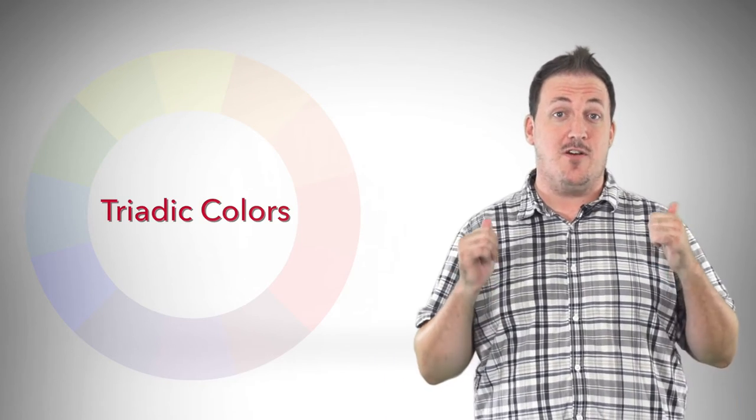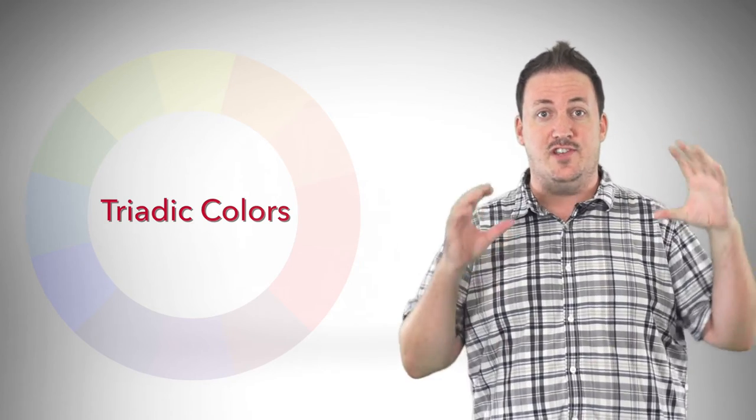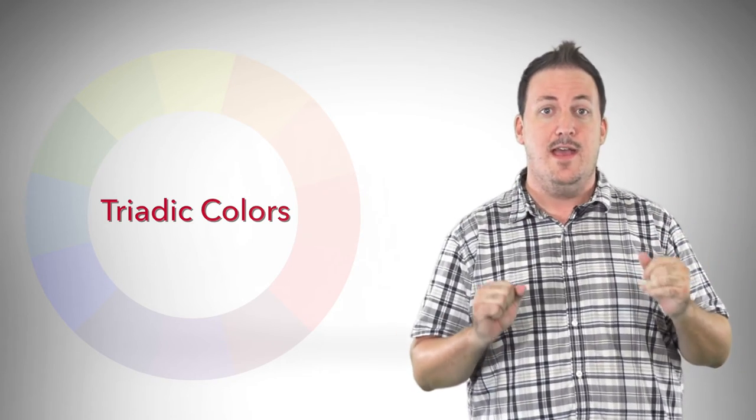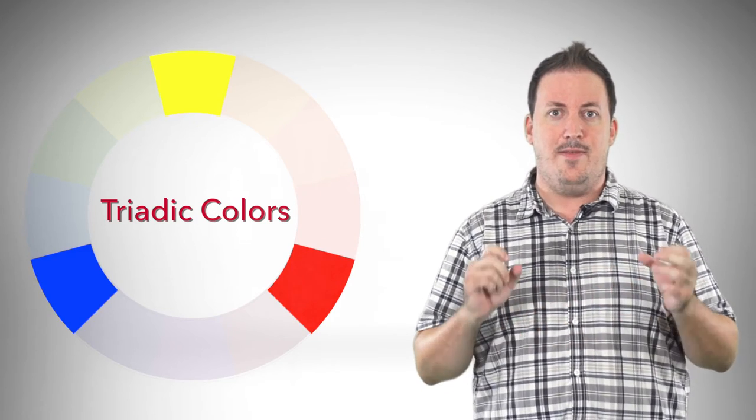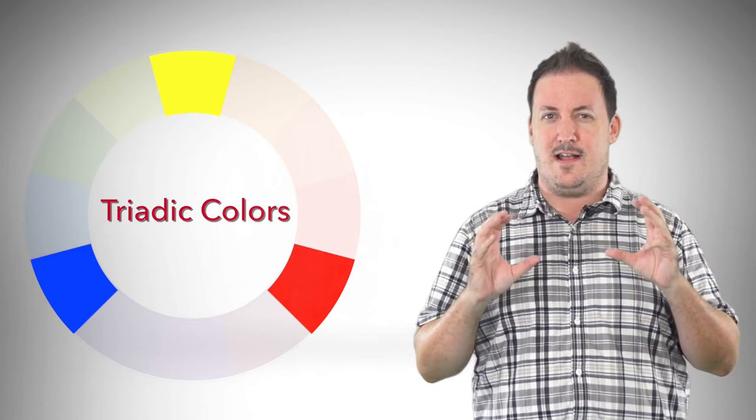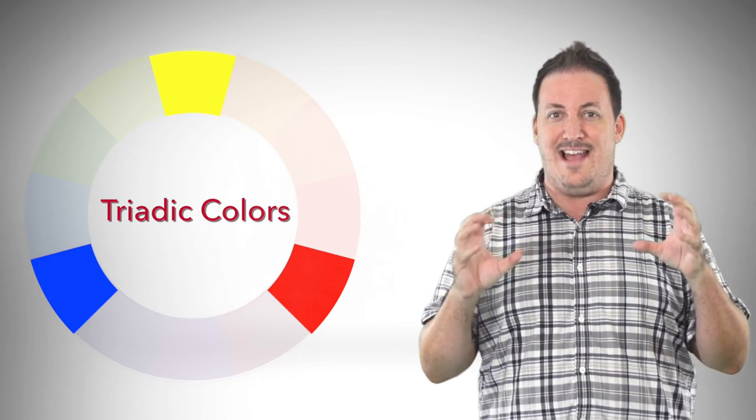So triadic colors. Triadic colors are evenly spaced apart on the color wheel. It's essentially like in a triangle, just as far apart from each other as the other one. An example of this would be the primary colors: red, yellow, and blue. The thing about this is it's going to create contrast, like a complementary color, but they're not so far apart that it's going to be as tense as that.